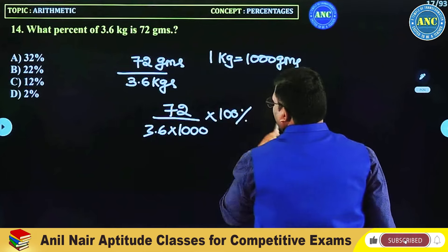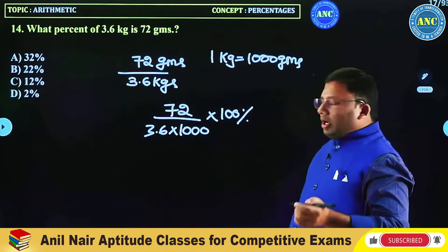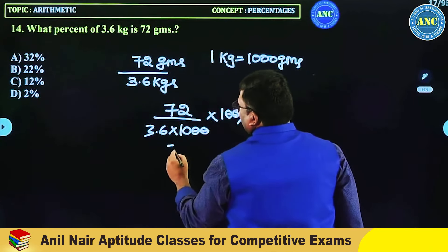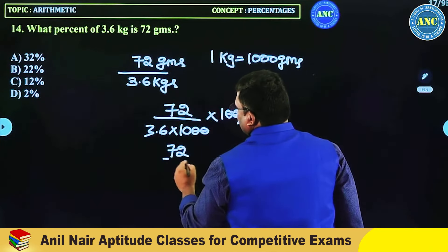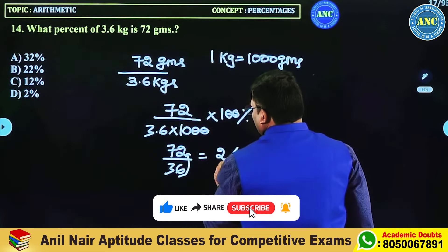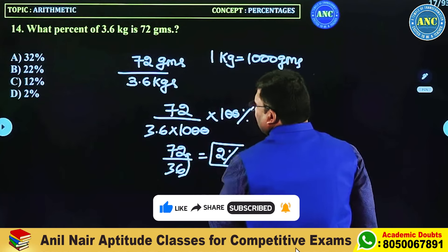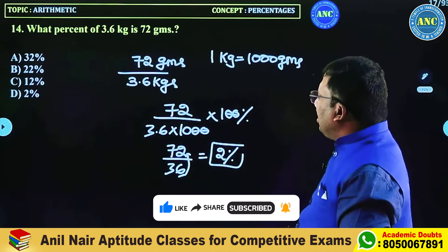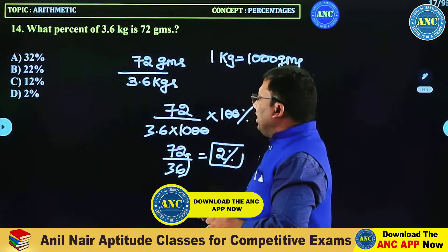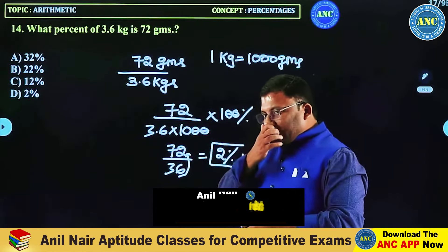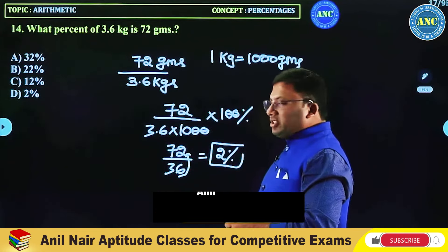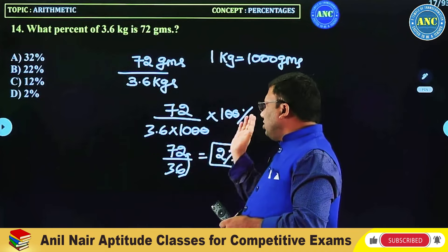So that gives us 100. Now see here: the 100s cancel (2 zeros cancel), leaving 72 by 36. How many times does 36 go into 72? 6 twos are 2 — it is 2 percentage. So 72 grams out of 3.6 kg is 2%. Since 1 kg = 1000 grams: 72 divided by (3.6 × 1000) × 100 = 2%.